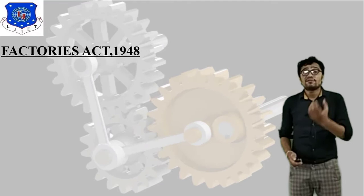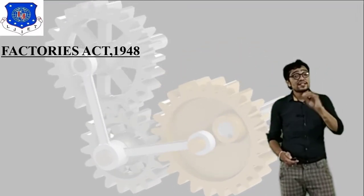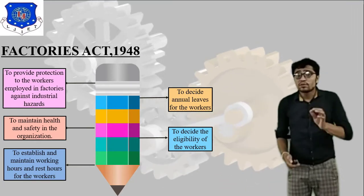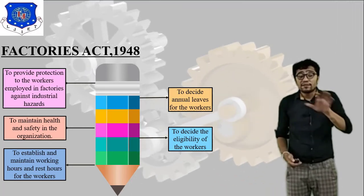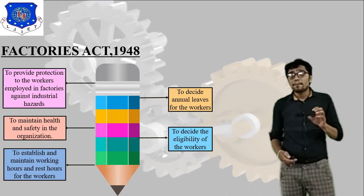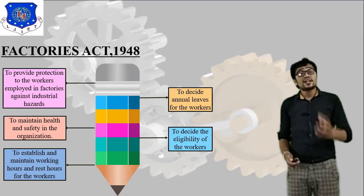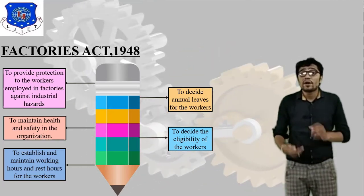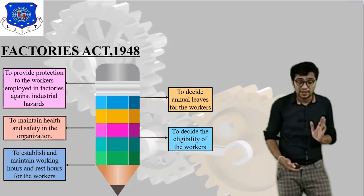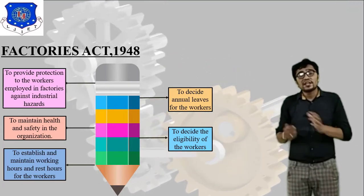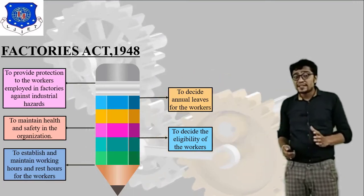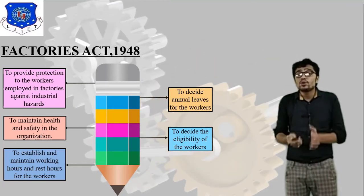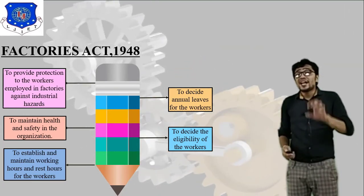An important act is the Factories Act 1948, which is basically related to worker safety. First, to provide protection to workers employed in factories against industrial hazards. Second, to maintain health and safety in the organization. Third, to establish and maintain working hours and rest hours for the worker. Fourth, to decide annual leave for the worker, and fifth, to decide the eligibility of the worker.